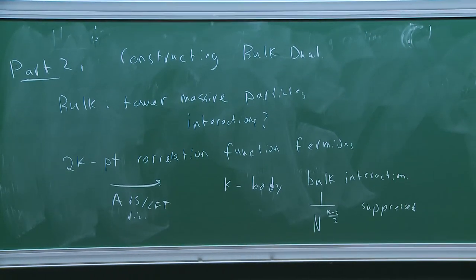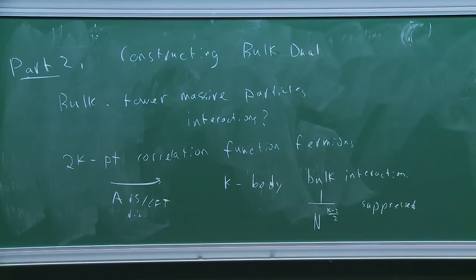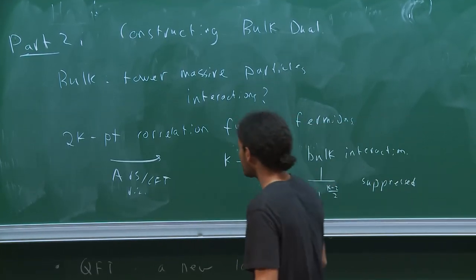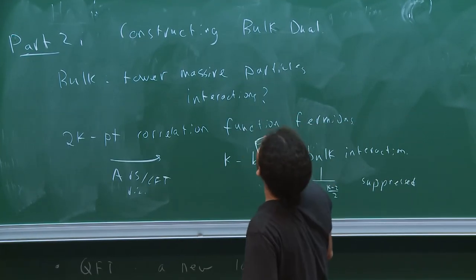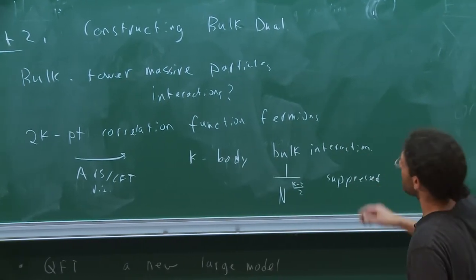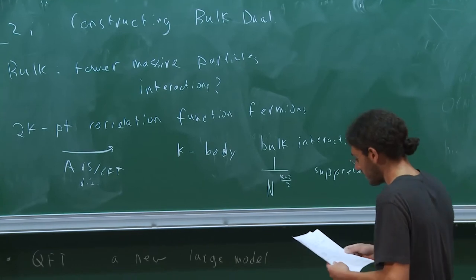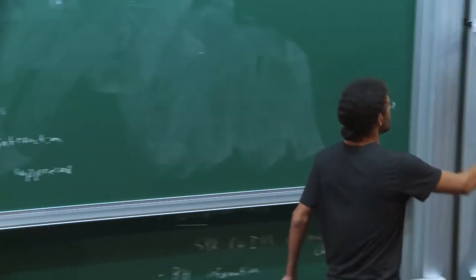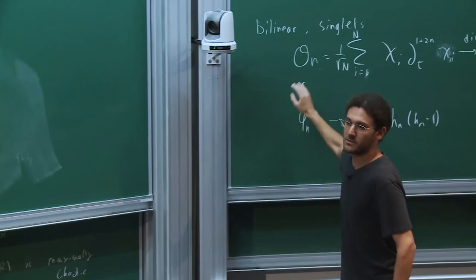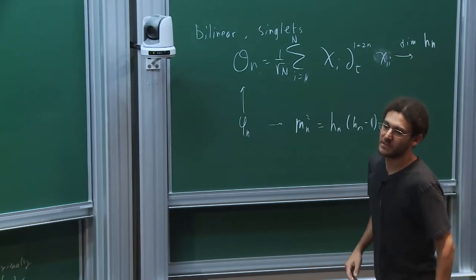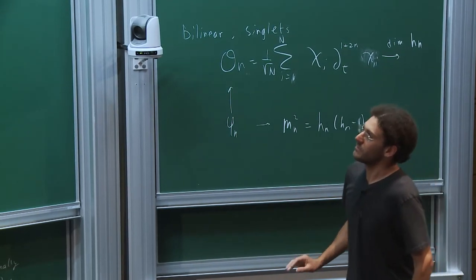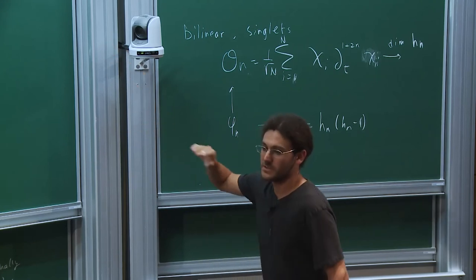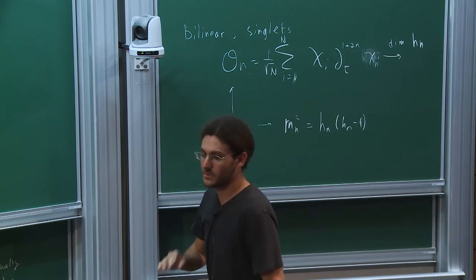Is this a local expansion of the effective Lagrangian? No — we will simply use, within SYK, the ADS-CFT dictionary. We compute correlation functions of the bilinear operators O_n and then use the ADS-CFT dictionary. We're not trying to rewrite the Lagrangian to look like a bulk — we simply apply the rules of ADS-CFT.